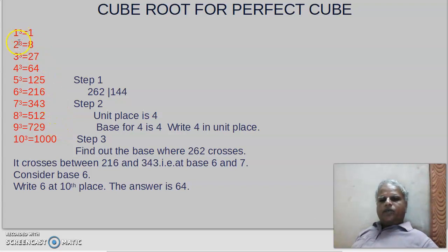Now let us see the relation. 1 cube ends with 1. For 2 cube, it ends with 8, and for 8 cube, the unit place ends with 2. For 3 cube, the unit place ends with 7, and for 7 cube, it ends with 3.